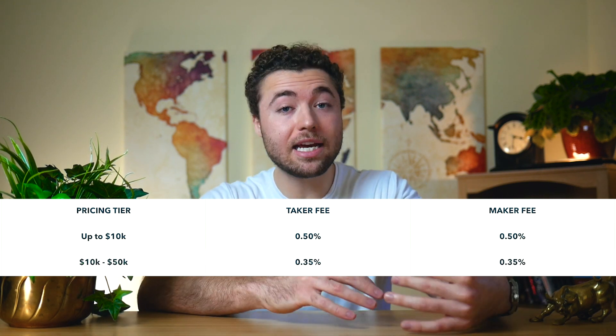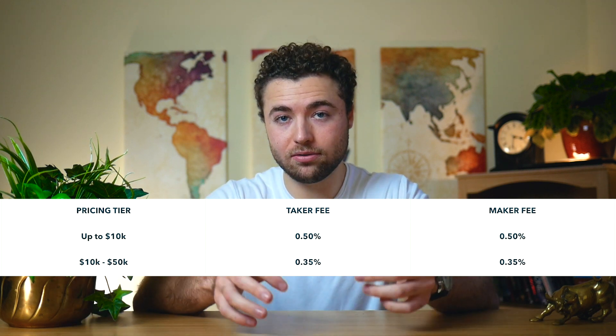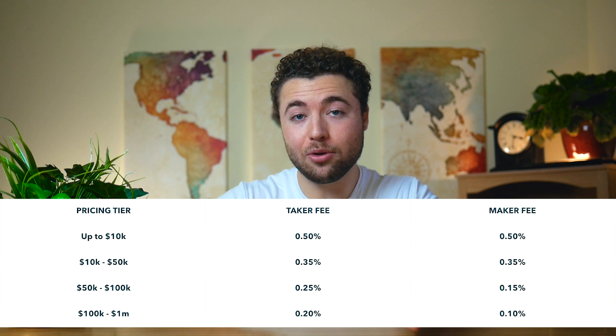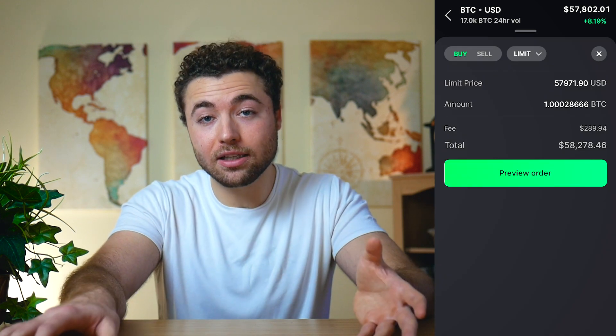In the second tier, the price drops slightly, but the maker and taker fee are still equal. However, as we move up further, the maker fee drops below the taker fee. If you don't know what this means — you are considered a taker if your order gets filled immediately, meaning if you buy or sell using a market order. However, if you make a limit order and your order does not fill immediately, then you're considered a market maker, because you're adding liquidity to the platform by allowing your money to sit there waiting for a taker to fill your order. Market makers are valuable to the platform because of this added liquidity, so the fees are lower.